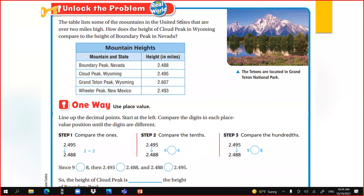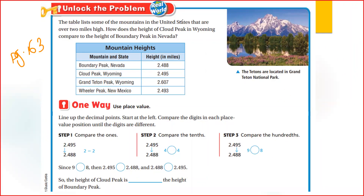The table lists some mountains in the United States that are over 2 miles high. How does the height of Cloud Peak compare with the height of Boundary Peak in Nevada? Here we want to compare between Cloud Peak and Boundary Peak. We have 2.488 and 2.495, and I want to compare between them.